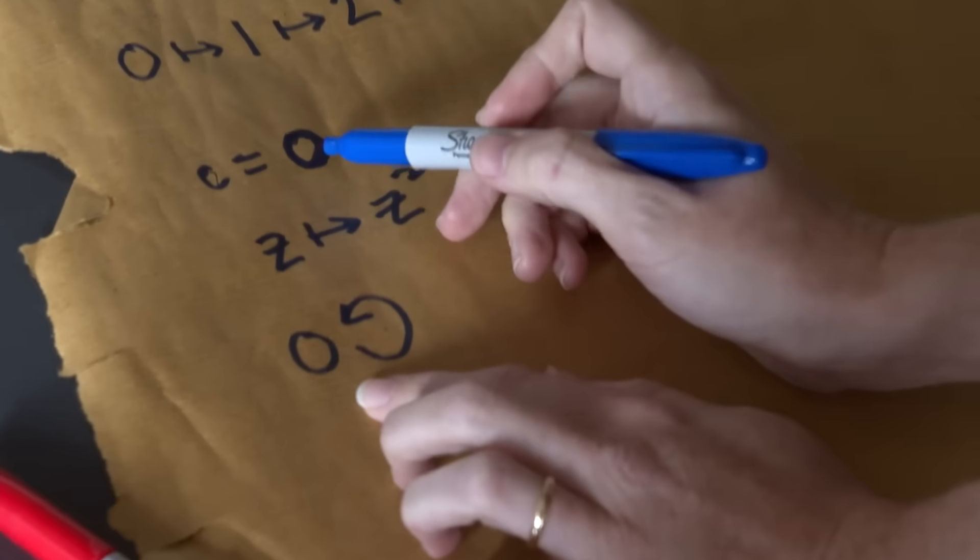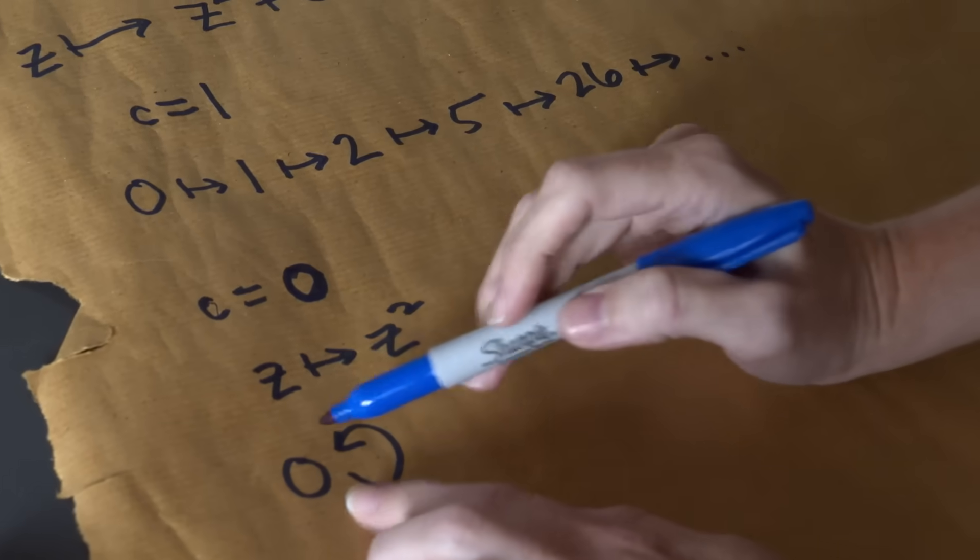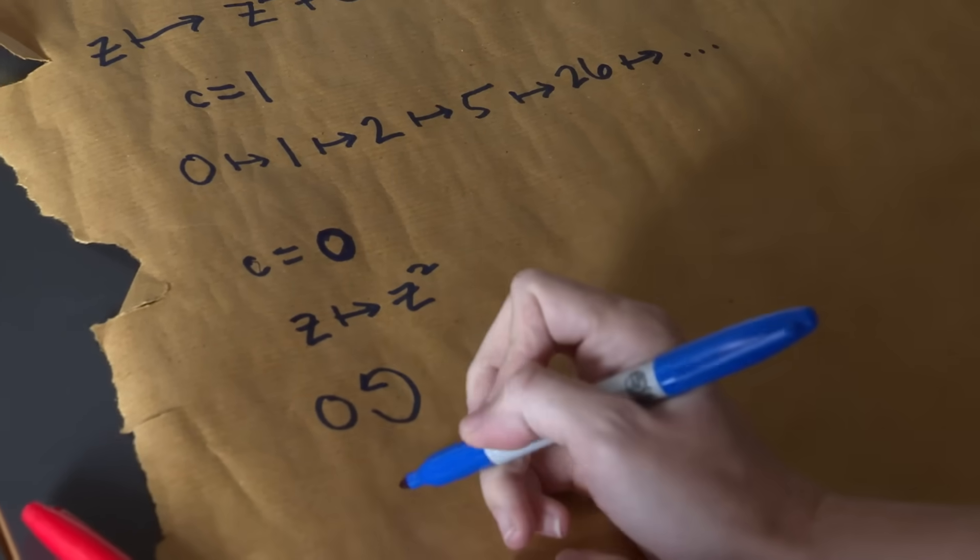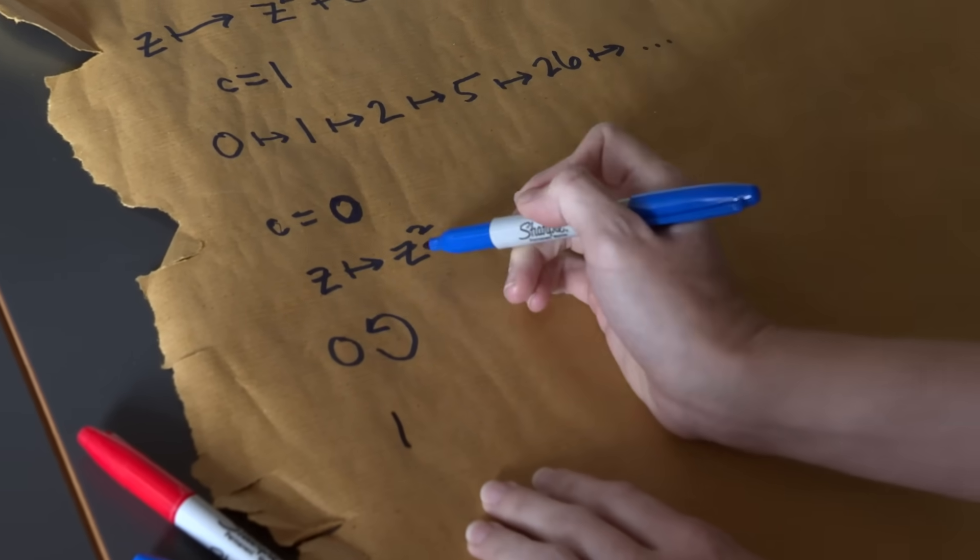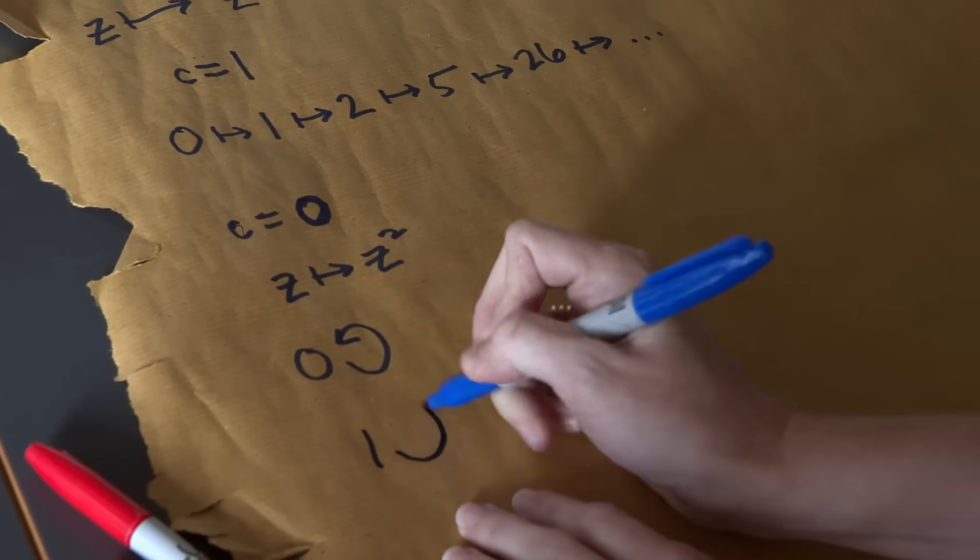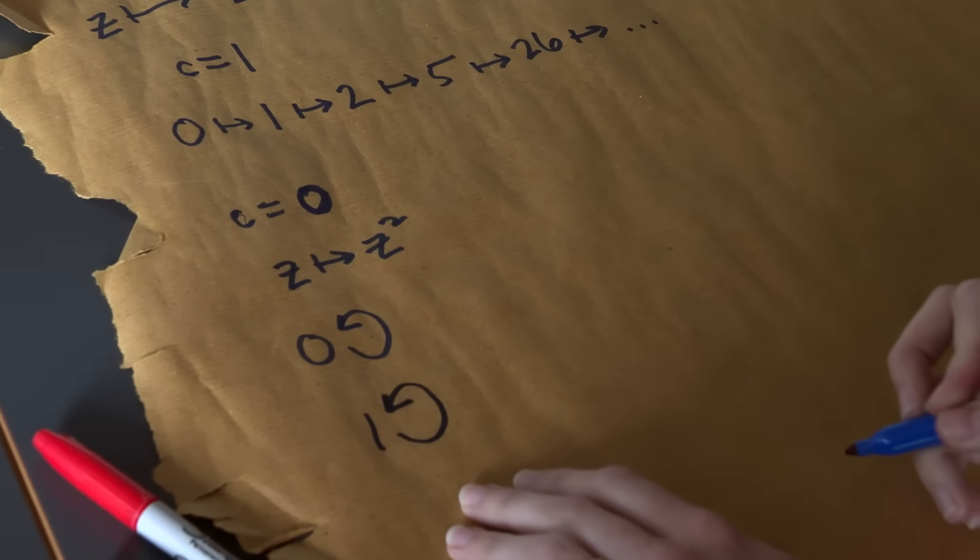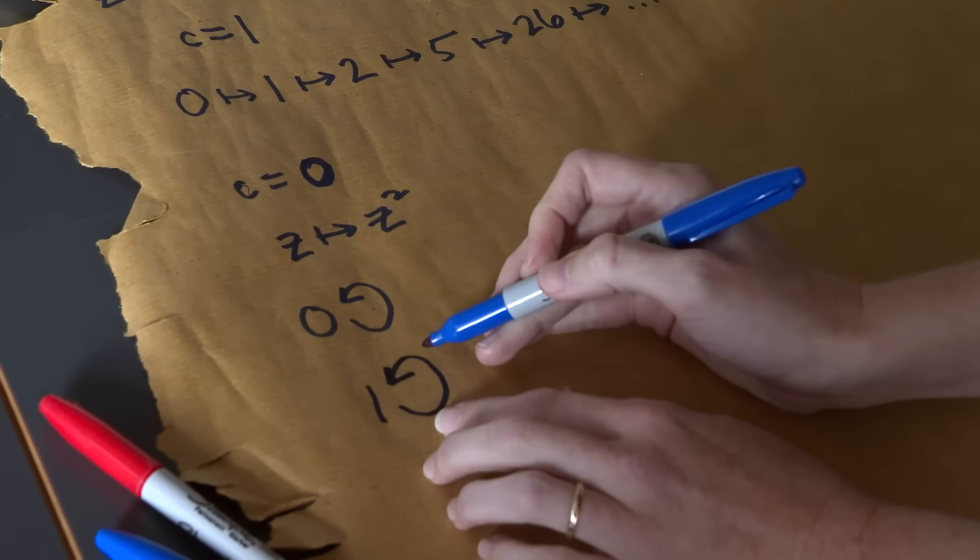Looking at this case of c equals 0, just to make it clear, I don't have to choose 0 here, right? Like if I put the number 1 into z maps to z squared, then 1 maps to 1 squared, which is still 1. So it's possible for something to be periodic, even if it's not starting at this point 0.